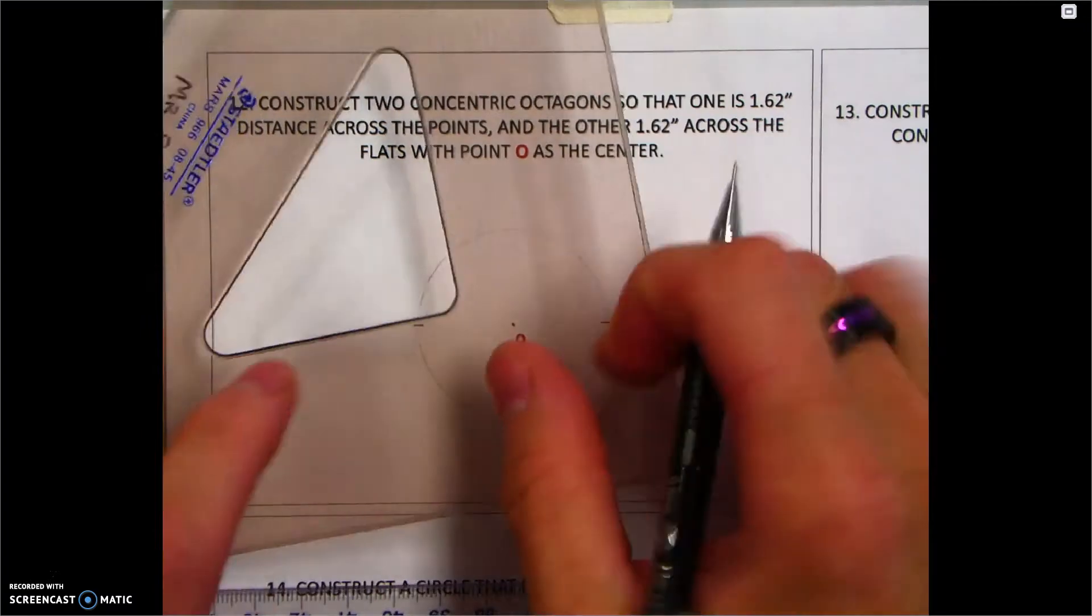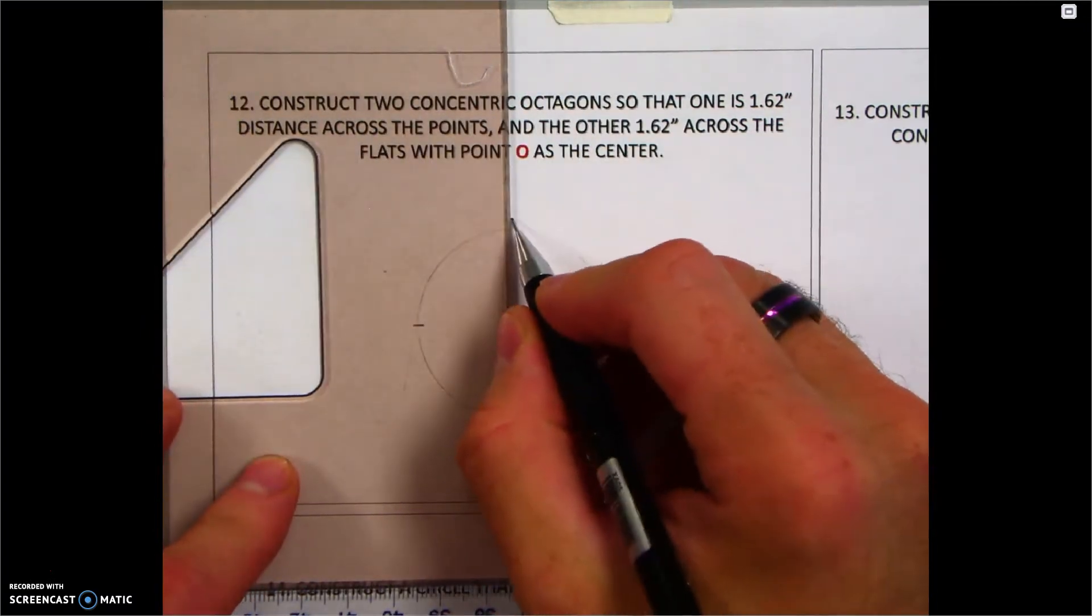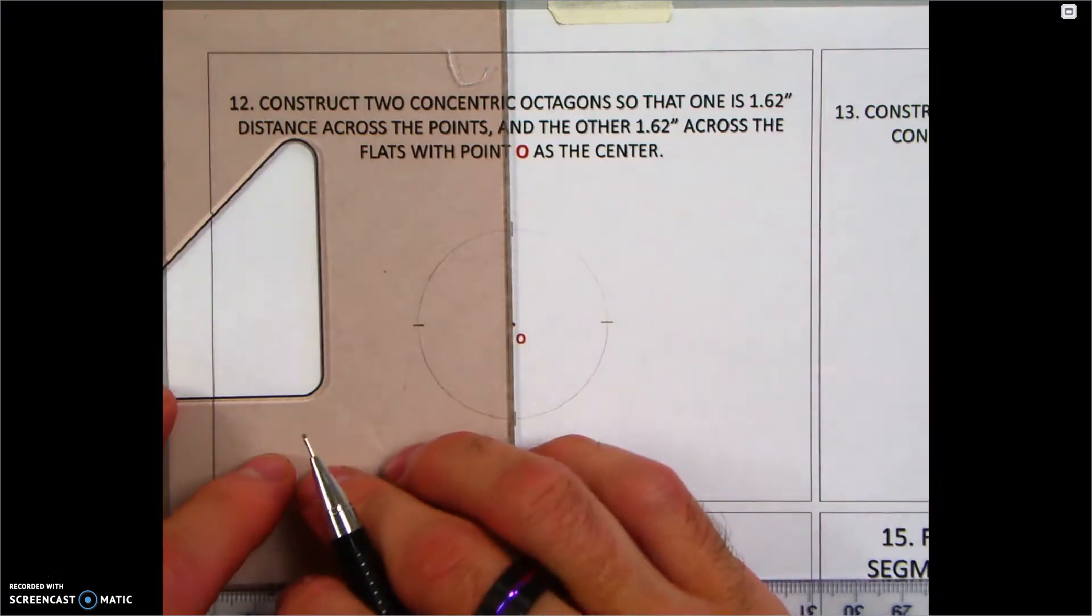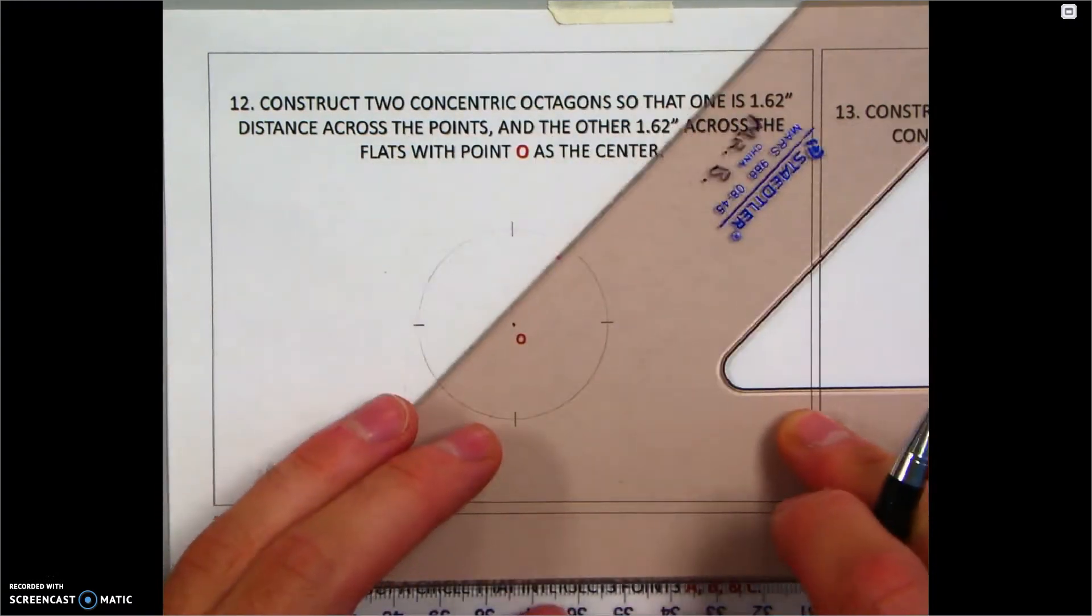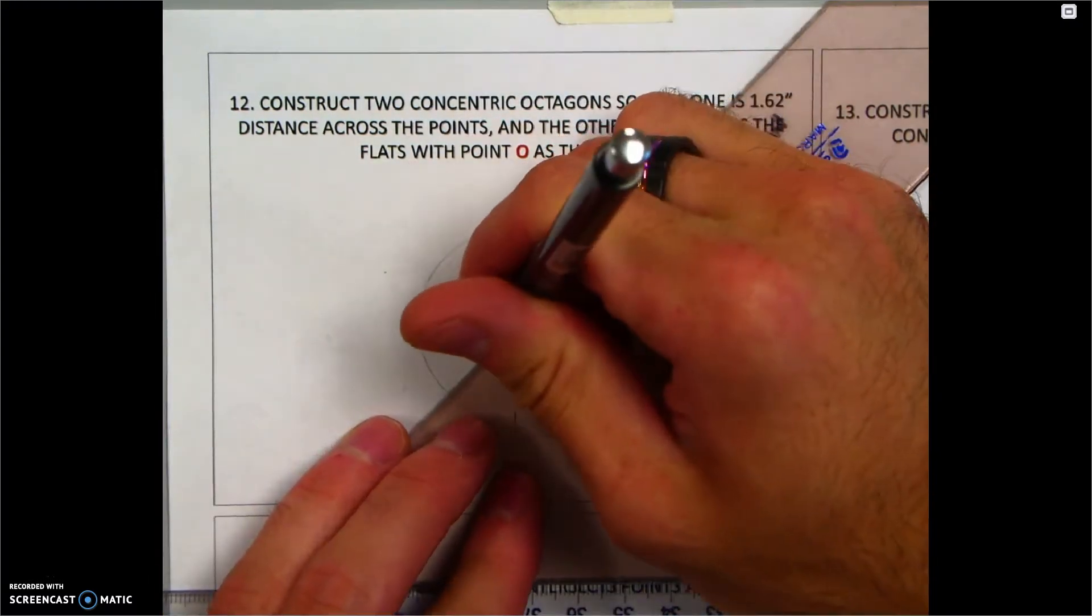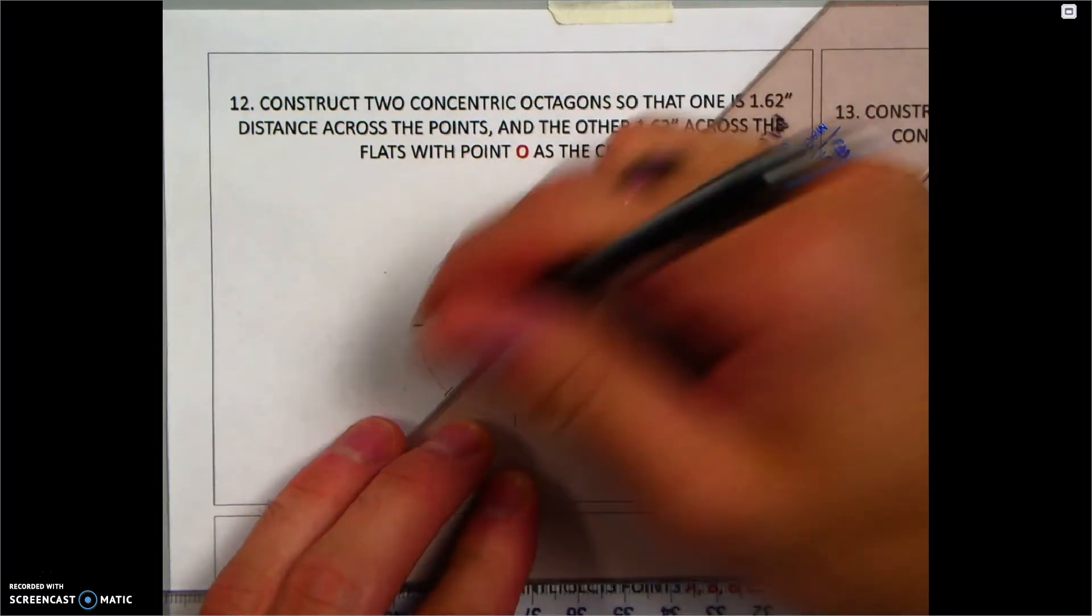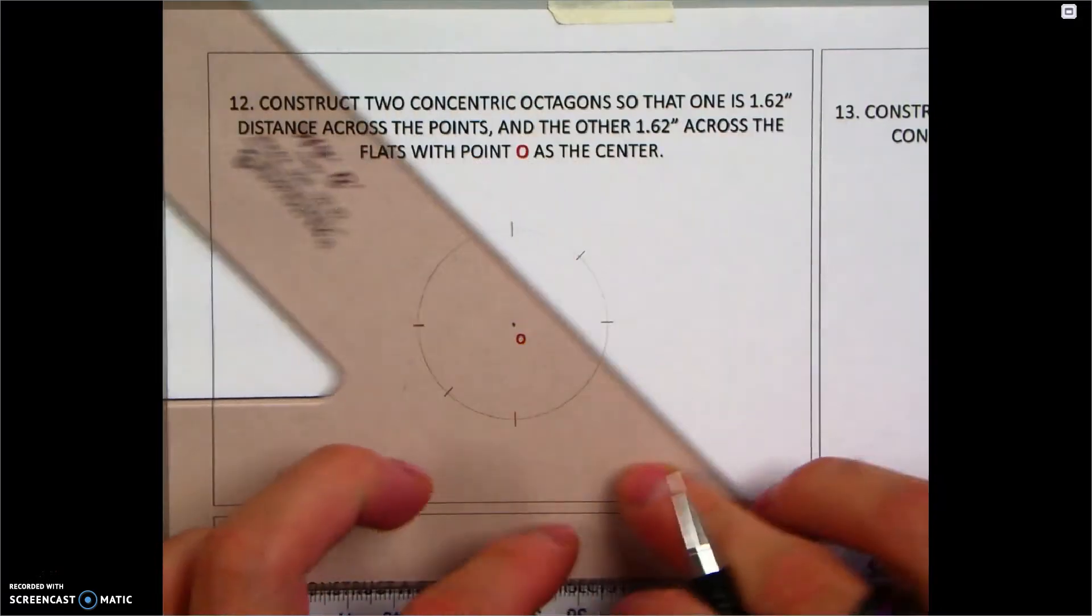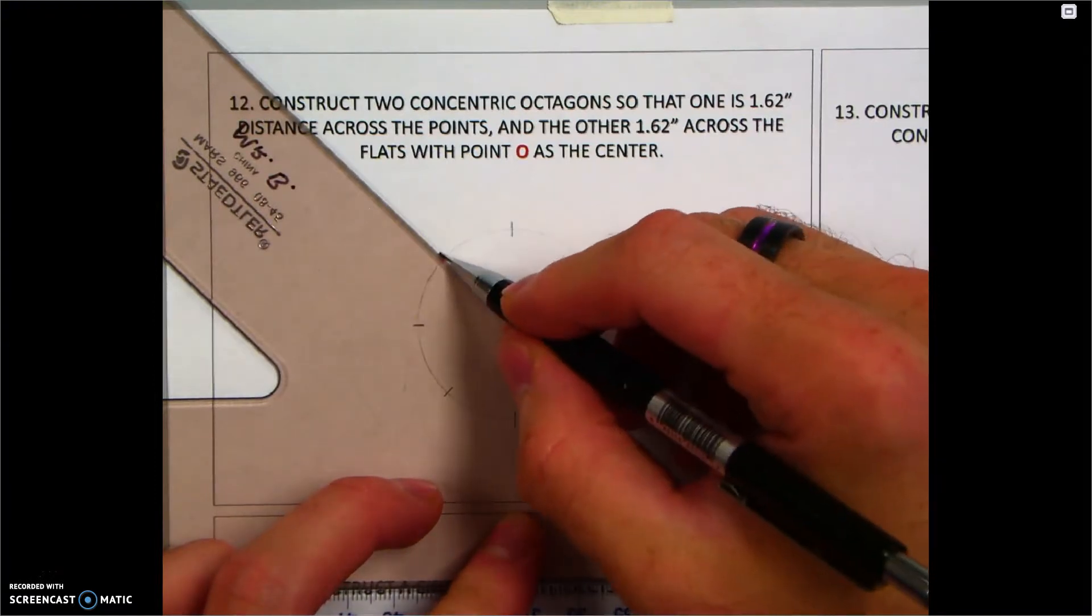I'll use my triangle, set that on top of the T-square, line it up with point O - mark up top, mark at the bottom. Then we're going to slide it over and line up that 45-degree, still on top of the T-square. Put point O, put a mark on the circle. Flip it over, same thing. Line it up with point O, mark on the circle.